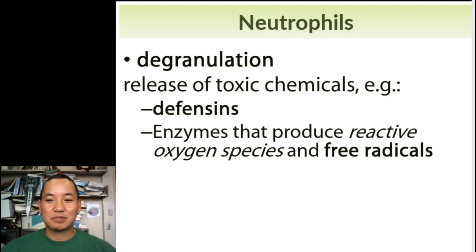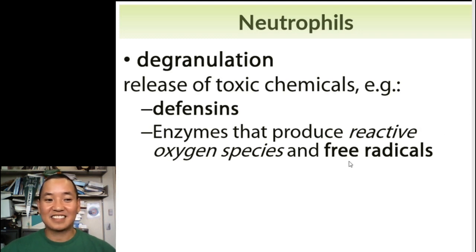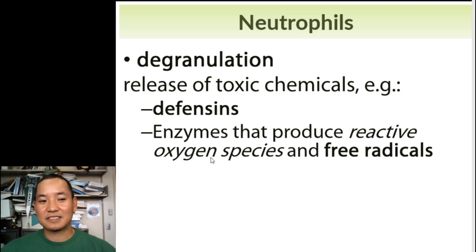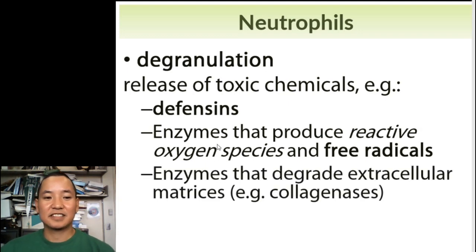These free radical chemicals try to rip off another electron from another chemical, kind of attacking the chemical structure — actually the subatomic structure — of other chemicals. So these free radicals help to attack the chemicals that make up the structure of a pathogen. Neutrophils also release enzymes that degrade extracellular matrices, which is the scaffolding and structural part of your connective tissue, helping to increase the movement of cells throughout your body.